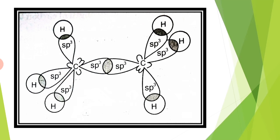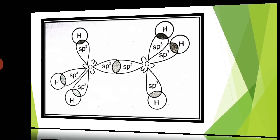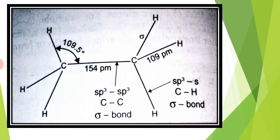Thus, in the ethane molecule, there is a formation of 109.5 degree bond angle. The bond length between the carbon-carbon bond is 154 picometers, and the bond length between the carbon and hydrogen bond is 109 picometers.